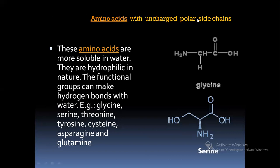Next, amino acids with uncharged polar side chains. These amino acids are more soluble in water; they are hydrophilic in nature. The functional groups can make hydrogen bonds with water. For example, in glycine you have a hydrogen attached as the R group, and in serine you have an OH group as the side chain, which can form hydrogen bonds with water. Examples include glycine, serine, tyrosine, cysteine, asparagine, and glutamine.